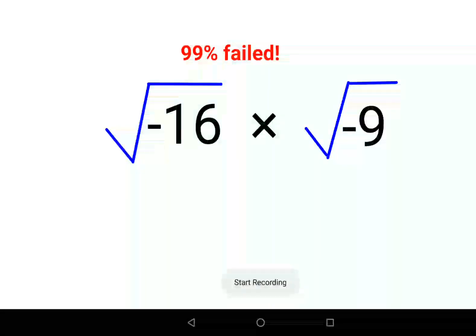Welcome everyone. So today I am going to solve this very nice square root problem, which is √(-16) × √(-9). And people thought that the answer for this one is 12. That is absolutely wrong.